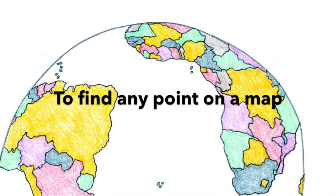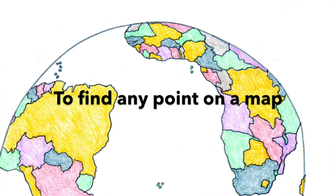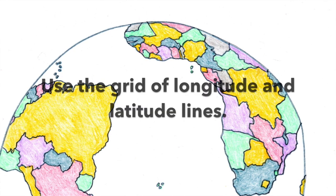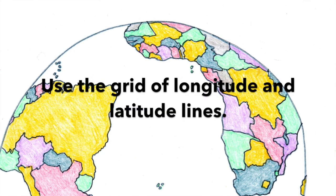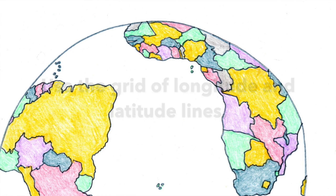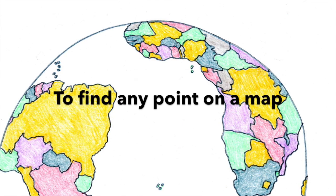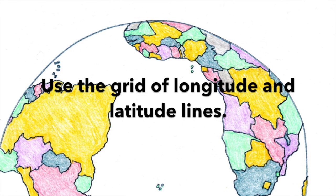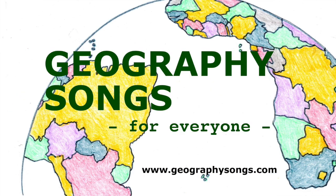To find any point on a map, use the grid of longitude and latitude lines.